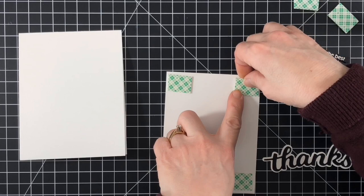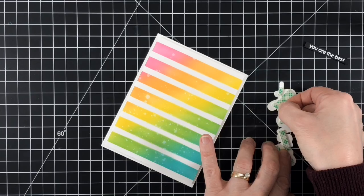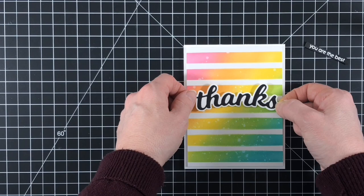I trimmed down my ink blended panel so it would be 5 1⁄4 inches by 4 inches wide, and then I put foam tape on the back of it so that it would pop up off the card base for a little bit of dimension. The word thanks, I decided to put on the front of the card with foam tape as well. Originally, I wanted to just glue it on there, but I thought the little extra dimension was a little nicer.